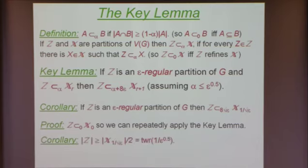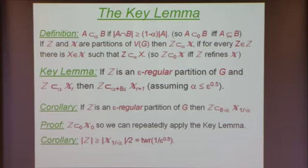If you have a partition — assuming epsilon is small enough so that 8 square root epsilon is at most one half — if Z is one-half contained in X_{1/sqrt(epsilon)}, then the number of clusters in Z is at least the number of clusters in this finest partition divided by 2. But since this finest partition is a tower of height 1 over square root epsilon, the same tower-type lower bound applies to Z.